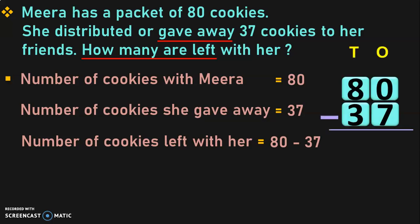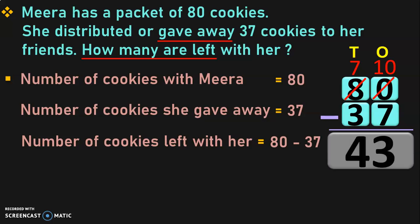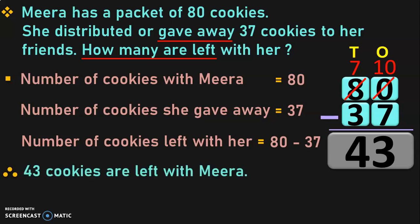Write down the place values and begin the subtraction from the ones place. 0 minus 7 cannot be done because 7 is greater than 0, so you move on to the tens place for regrouping or borrowing. In the tens place, we have 8 tens which when regrouped becomes 7 tens plus 10 ones. So now you will have 10 ones in the ones place. 10 minus 7 is 3, and 7 minus 3 is 4. So the difference is 43 — that is the number of cookies left with Meera. Therefore, 43 cookies are left with Meera.